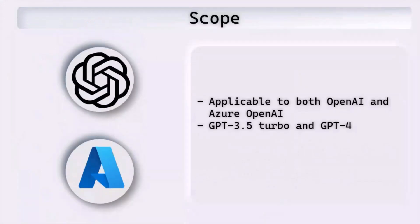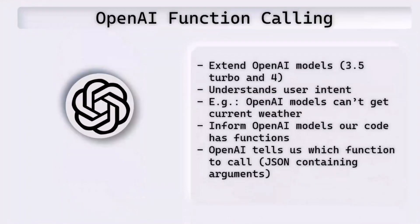The scope of this particular message extension is applicable to both OpenAI and Azure OpenAI. The models with which it can be used are GPT-3.5 Turbo and GPT-4. In this particular sample we are using OpenAI, but it can be changed to Azure OpenAI very easily.